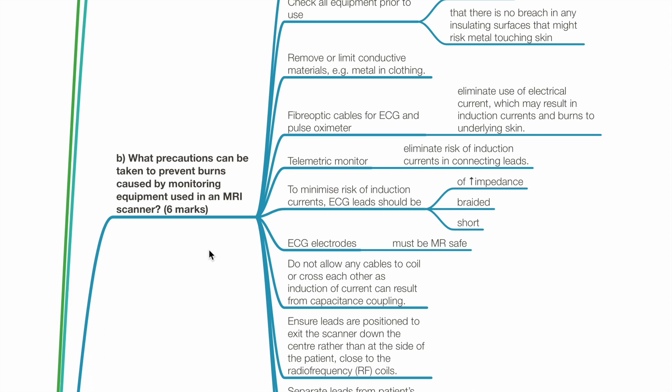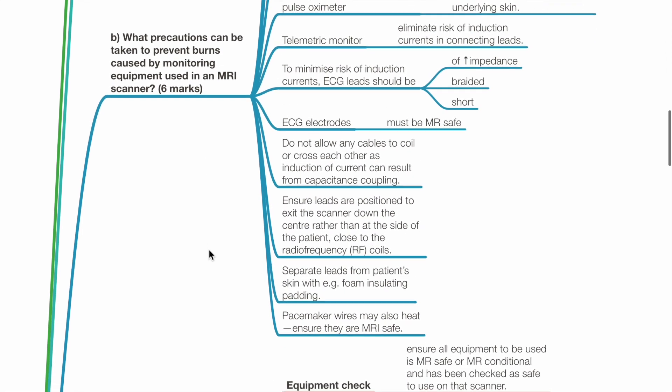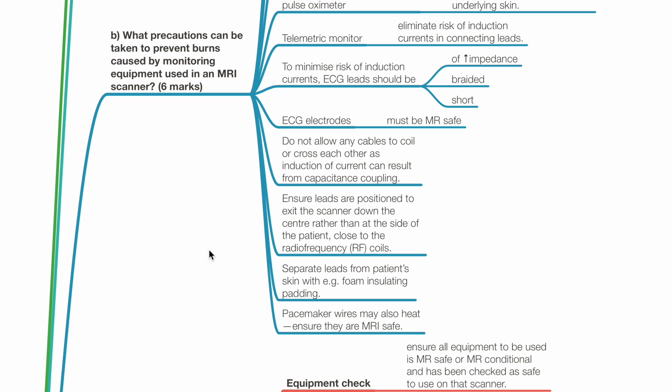To minimize the risk of induction currents, ECG leads should be of high impedance, braided, and short. ECG electrodes must be MR-safe. Do not allow any cables to coil or cross each other, as induction of current can result from capacitance coupling.